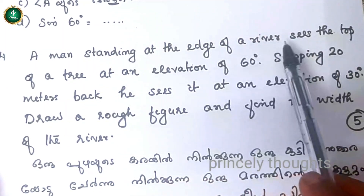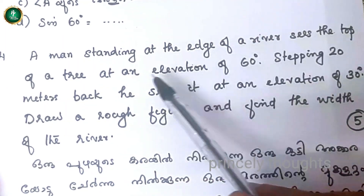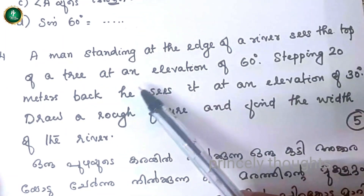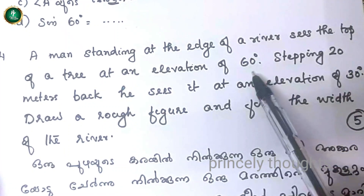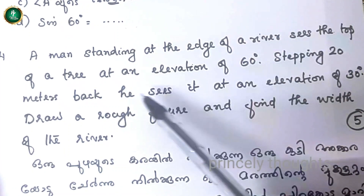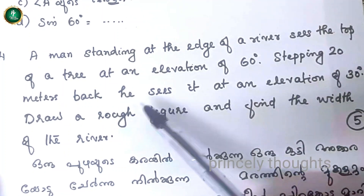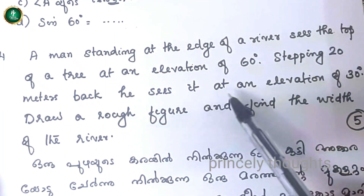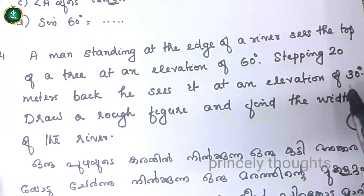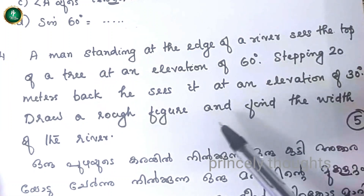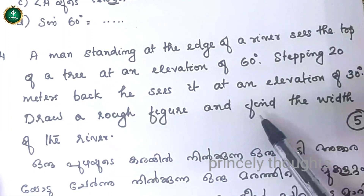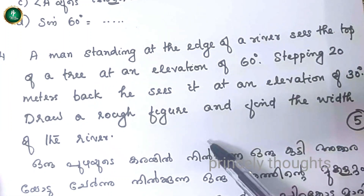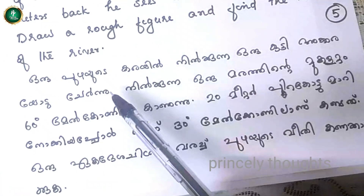A man standing at the edge of a river sees the top of a tree at an elevation of 60 degrees. Stepping 20 meters back, he sees it at an elevation of 30 degrees. Draw a rough figure and find the width of the river.